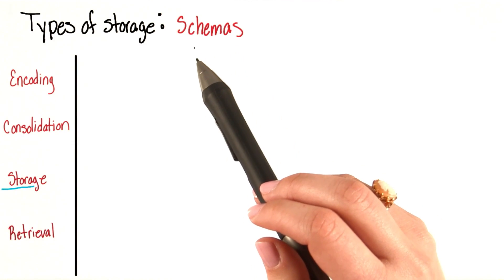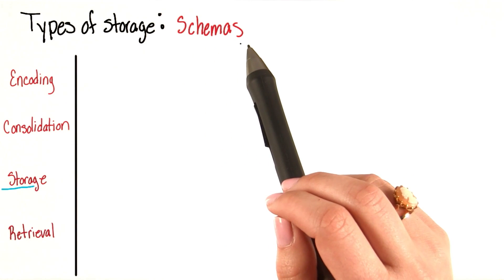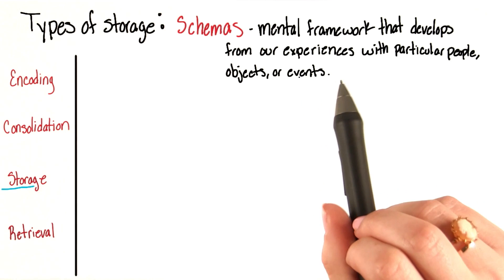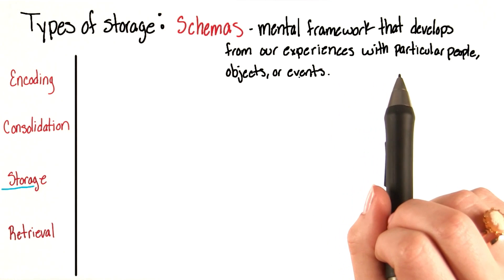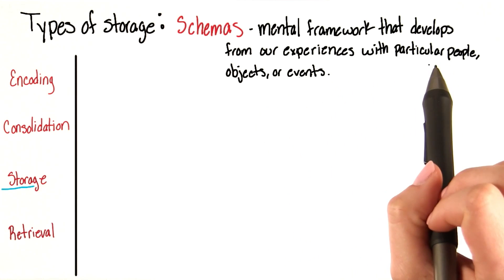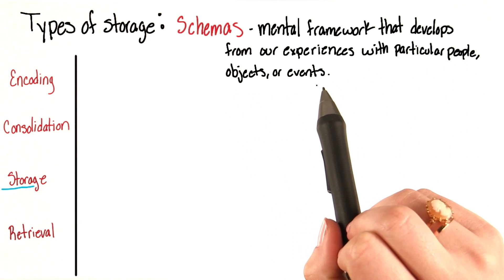Another distinct way we can remember information is through schemas. We can define schemas as a mental framework that develops from our experiences with particular people, objects, or events.